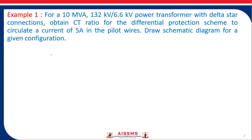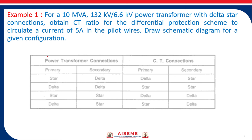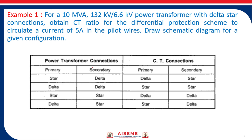Before moving towards actual calculations, let us see how CTs are connected in case of a power transformer according to its primary and secondary winding connections. This table shows power transformer connections as well as CT connections. For a star-delta power transformer, CT secondaries on the primary side are connected in delta and on the delta side in star. For delta-delta, CT connections are star-star, and for star-star power transformer connections, CT connections are delta-delta.